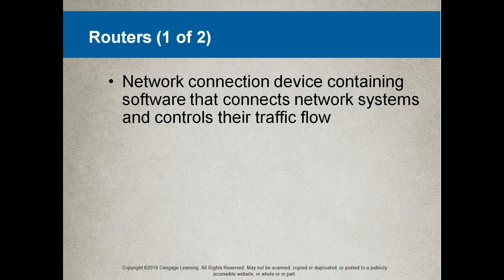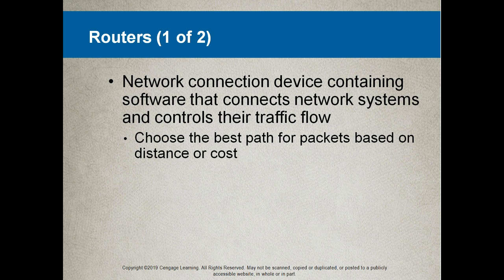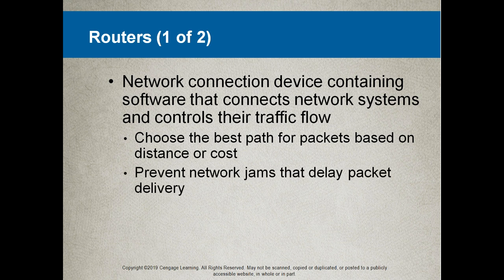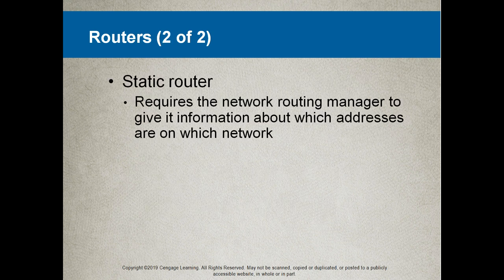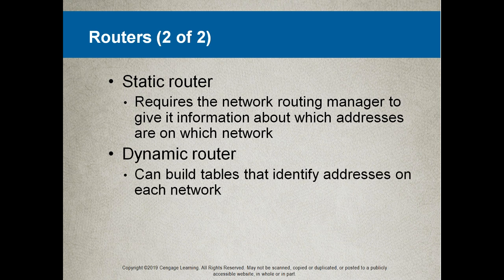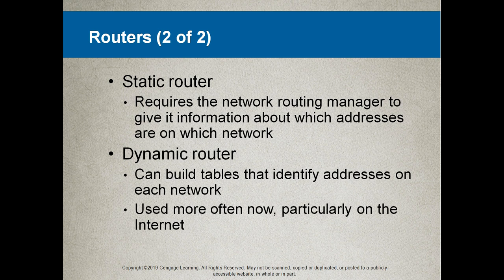Routers are network connection devices containing software that connects network systems and controls their traffic flow. A router chooses the best path for packets based on distance, cost, or both. It prevents network jams that delay packet delivery and can handle packets of different sizes. A static router requires the network admin to provide information about which addresses are on which network. A dynamic router can build tables that identify addresses on each network and is used more often now, particularly on the internet.